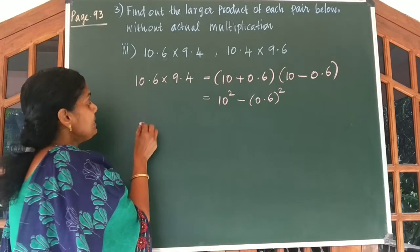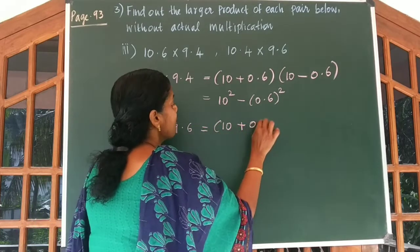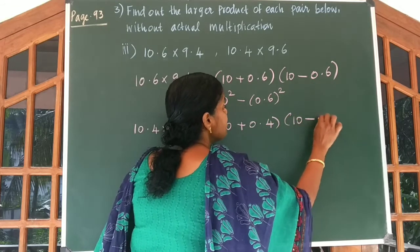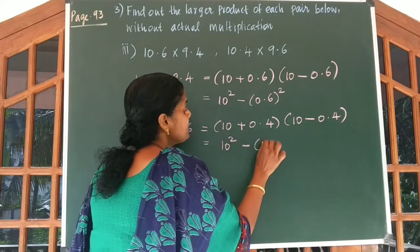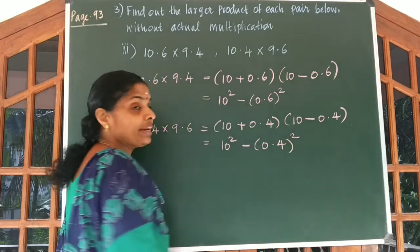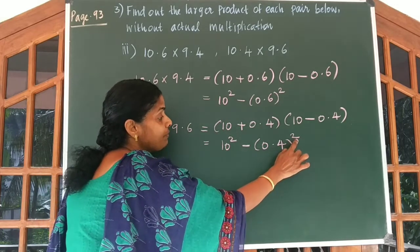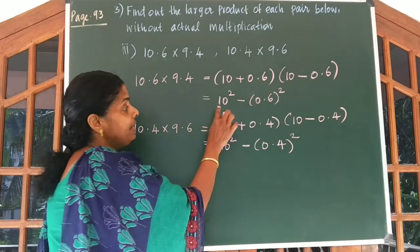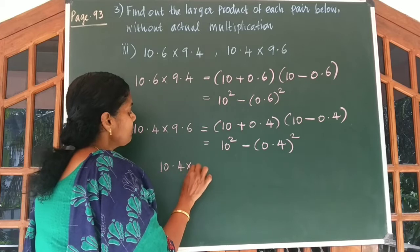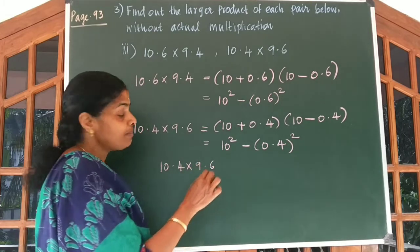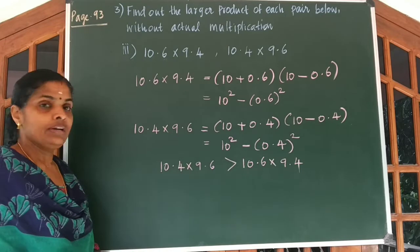Similarly, we can write 10.4 into 9.6 as 10 plus 0.4 into 10 minus 0.4, which equals 10 square minus 0.4 squared. By looking at these two answers, you can understand that 10 square minus 0.4 squared is always greater than 10 square minus 0.6 squared. So 10.4 into 9.6 is greater than 10.6 into 9.4.